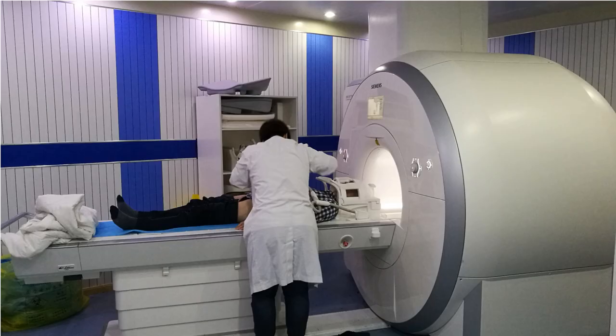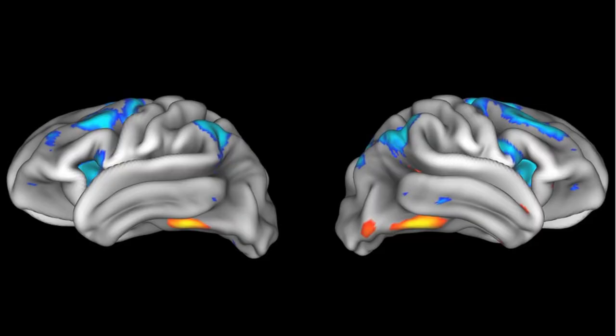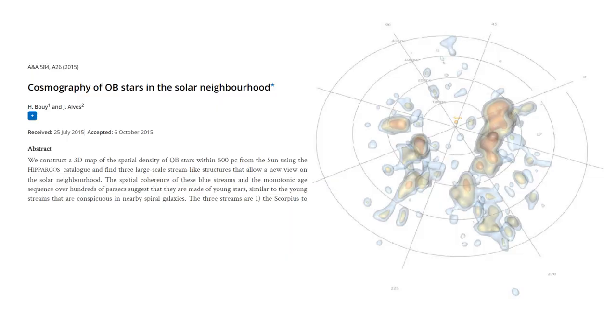Fortunately, there are a large number of well-developed algorithms to do exactly this in medicine, where they are used to extract tissue density features from the point cloud created by an MRI scan. The MRI machine creates a series of slices that show point clouds representing tissue density. These density slices can be converted into 3D meshes given a density range. A key paper that applies these algorithms to astronomy is Bowie and Alves 2015, which produced a density map of OB stars from Hipparchus, effectively implementing an MRI scan of the Milky Way.